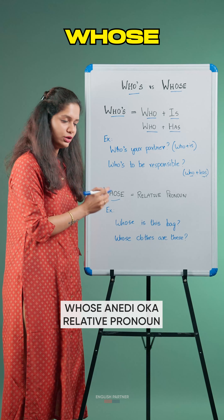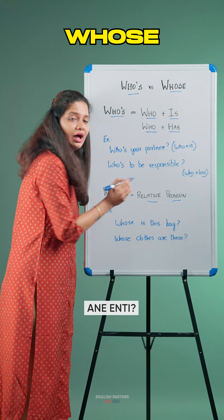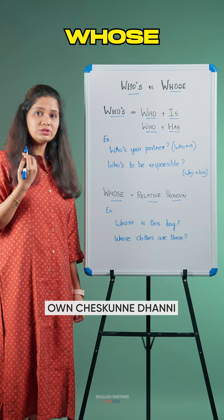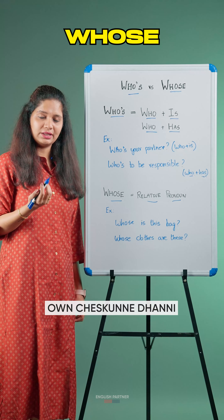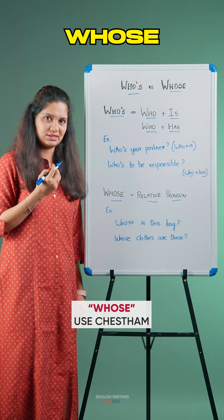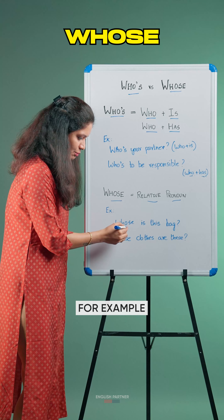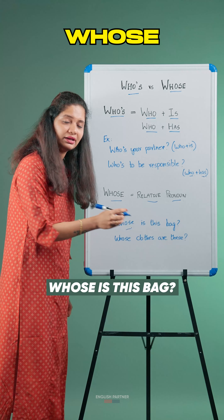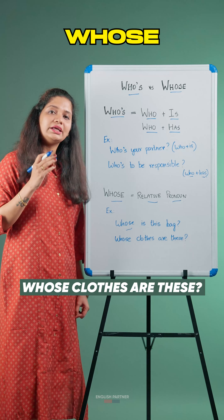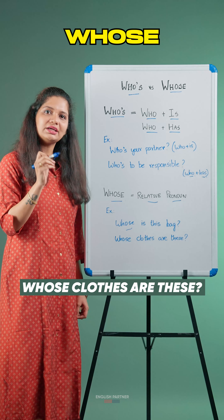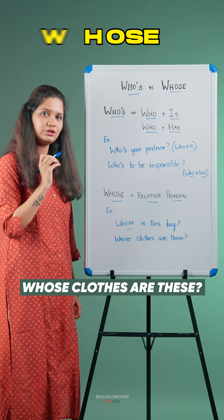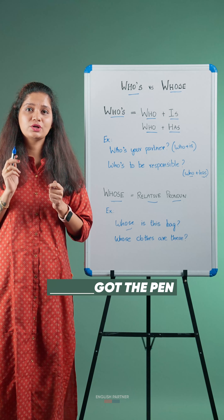Next, 'Whose' — Whose is a relative pronoun. It means 'yavaru daina' — belonging to someone. We use 'whose' when we want to know who something belongs to. For example: Whose is this bag? Whose bag is this? Whose clothes are these? 'Whose' denotes possession.